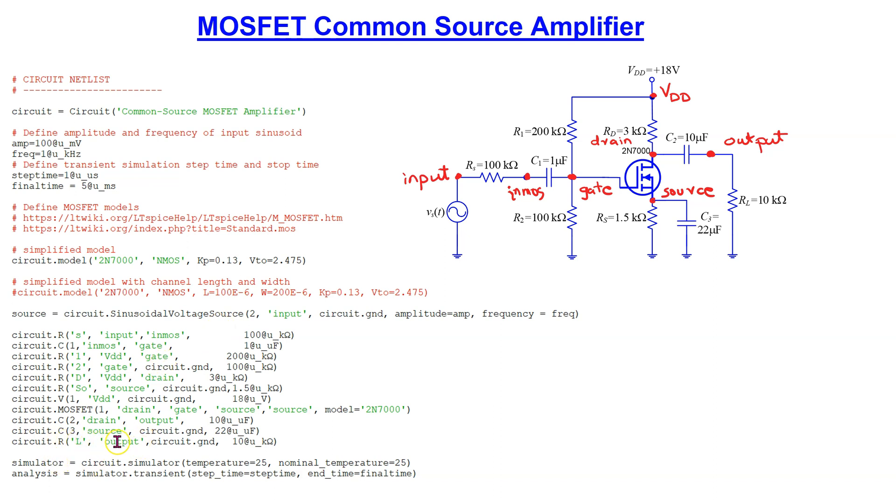The MOSFET four terminal connections for the drain, gate, source, and substrate are specified. Please pause the video now if you wish to study the circuit netlist in more detail.